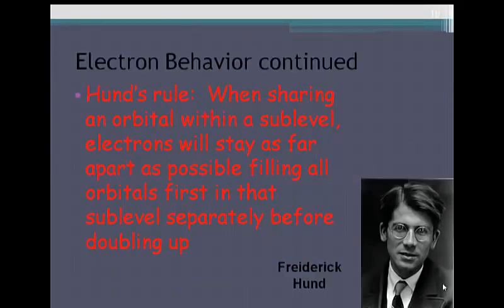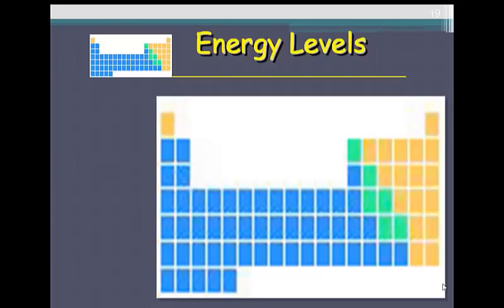Last, we have Hund's rule. This was put together by Friedrich Hund. When sharing an orbital within a sublevel, electrons will stay as far apart as possible, filling all the orbitals first, spinning in the same direction in that sublevel before doubling up. So that you can have, remember how many can you have in an orbital? You can only have two, spinning electrons spinning in the opposite direction.